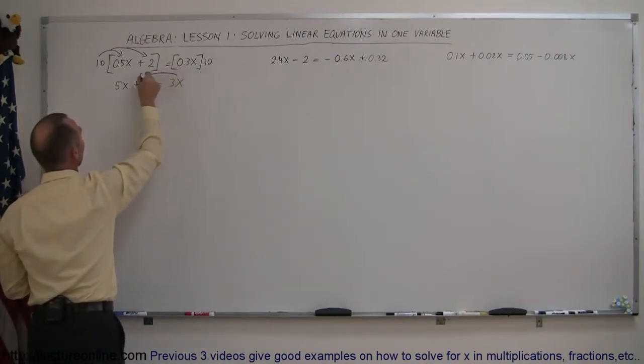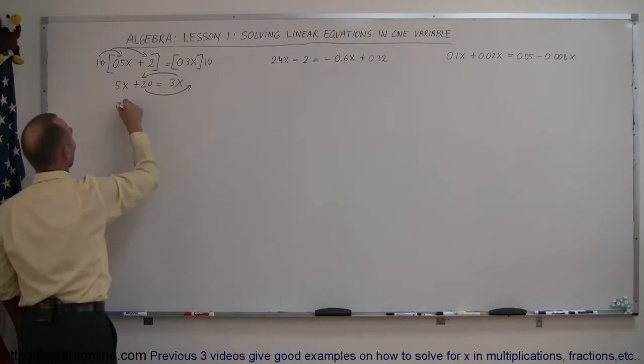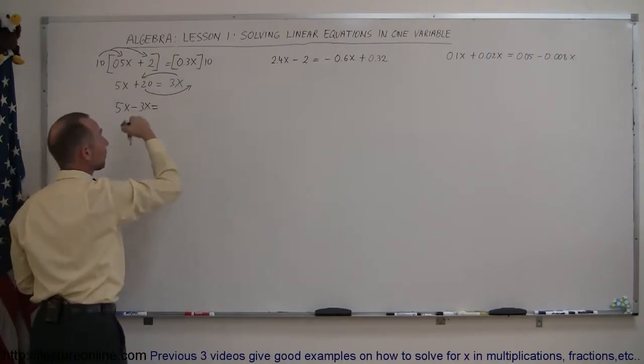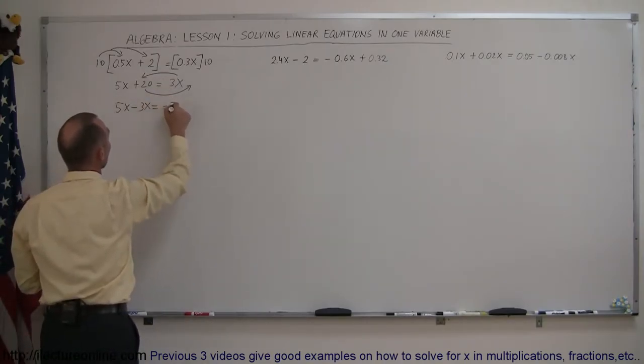So when we do that, the 10 will distribute over the 0.5x and the 2. So 10 times 0.5 gives you 5x, and 10 times 2 gives you plus 20, equals 10 times 0.3x gives you 3x.